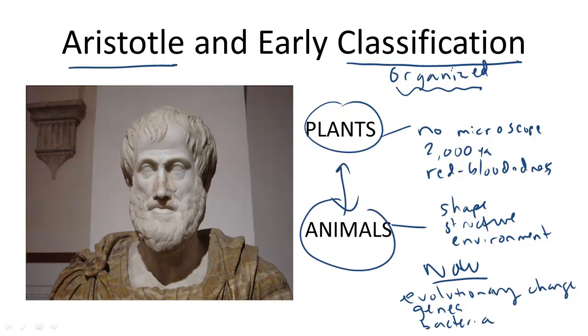But many others, including a Swedish botanist, came along to develop a system of organization in the 1700s called taxonomy that would serve as the foundation for our current system of classification.